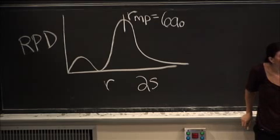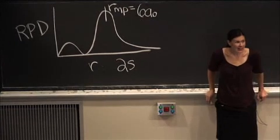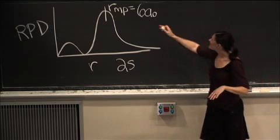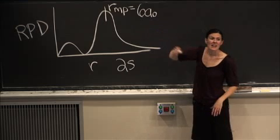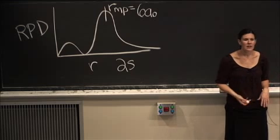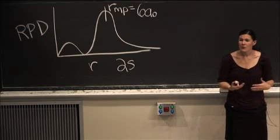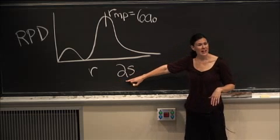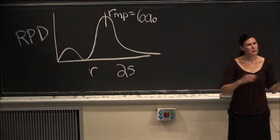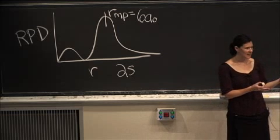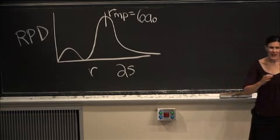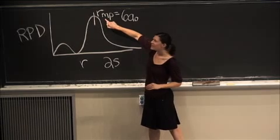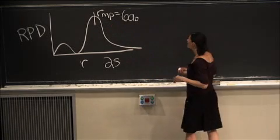In a sense, if we're thinking about the excited state of a hydrogen atom — the first excited state, the n equals 2 state — what we're saying is that it's actually bigger than the ground state 1s hydrogen atom. When we say bigger, remember we're talking about probability — the most probable radius is further away from the nucleus.